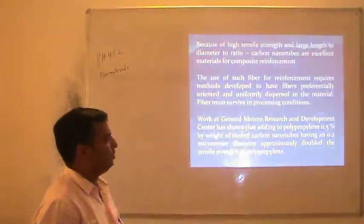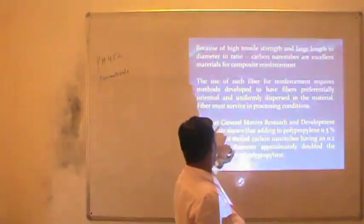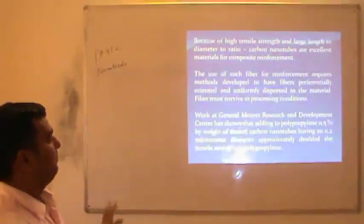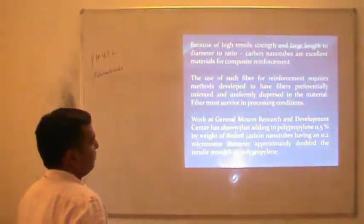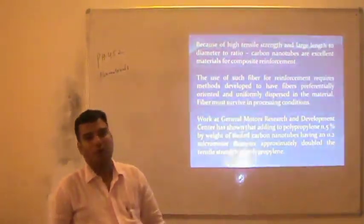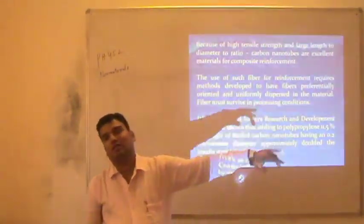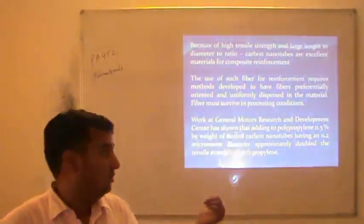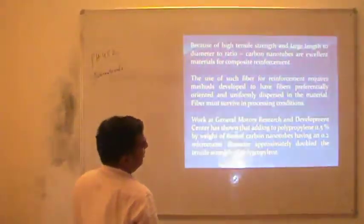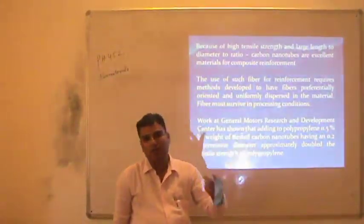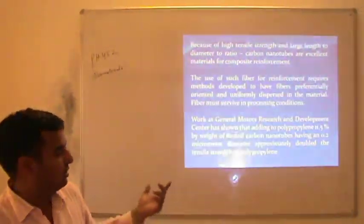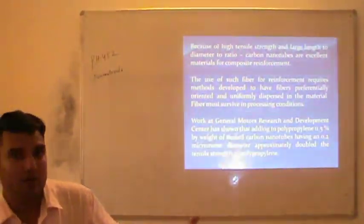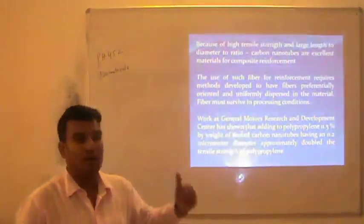Research at General Motors found that adding 11.5% by weight of nested carbon nanotubes — having approximately 0.2 micrometer diameter — to polypropylene doubles the tensile strength of polypropylene. So only 11.5% of carbon nanotube in polypropylene increases the strength twofold. This is very useful even in the automobile industry — by using carbon nanotubes we can increase the tensile strength of materials used in cars. Generally, steel or iron and other materials are used in car bodies, but those materials may be lightened by using carbon nanotubes.